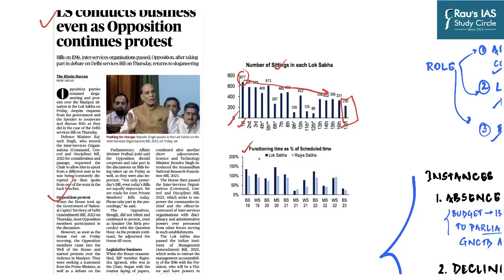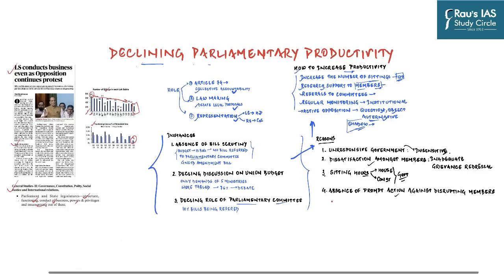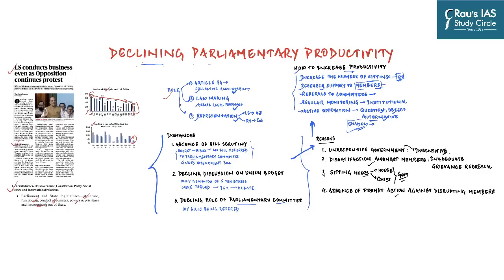This second graph shows functioning time as a percentage of scheduled time. Even when Lok Sabha sits for 230 days, the time utilized is mainly less than 50 percent. In this discussion we will understand the role of parliament, the instances showing a decline in its functioning, the reasons behind it, and how we can increase parliamentary productivity.